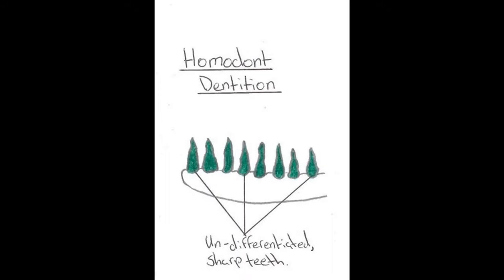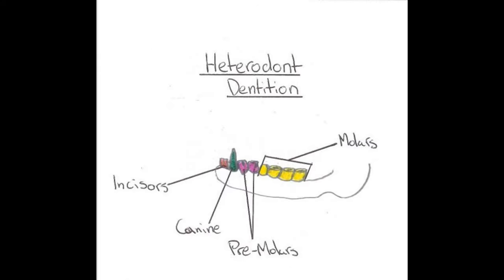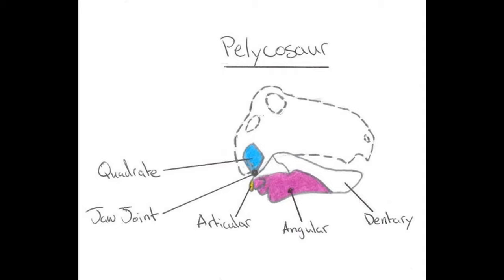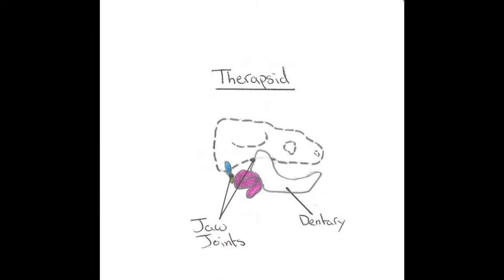Reptiles possess a homodont dentition, which means their teeth are all the same. The differentiation of Cyanodont teeth was an important innovation in mammal evolution. This is known as heterodont dentition and it allowed for a wider variety of feeding strategies to take place. Changes to dentition meant changes to the structure of the lower jaw, with the number of bones present in the lower jaw becoming reduced to just the dentary and skull muscle bones.